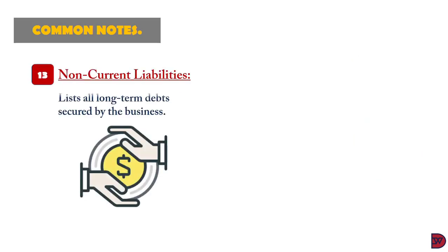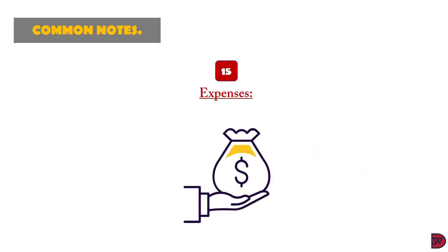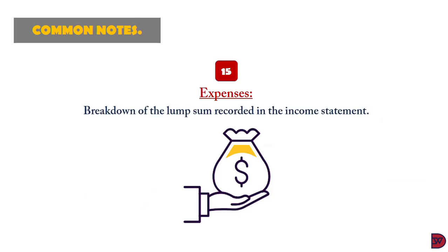Non-current liabilities will provide all long-term obligations to the business with all terms clearly spelled out. If it has a loan, the period and interest rate will be captured here. Current liabilities, on the other hand, will capture all short-term obligations such as payables, providing a further breakdown into trade and other payables, current taxes, and others clearly stated. This aids interpretation, especially for the trade payables payment period.